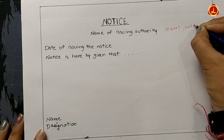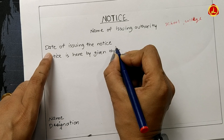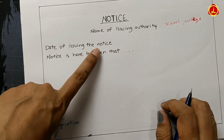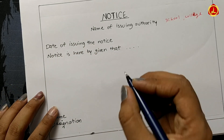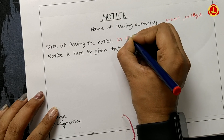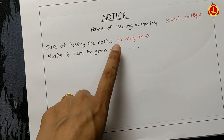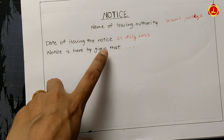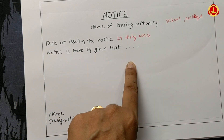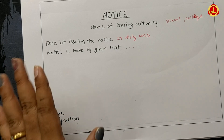Then comes the location, followed by the date of issuing the notice. Remember, the date written is the current date — the date on which the notice is being written. The date must be written in the correct format, otherwise you will not get marks. After that, you start the body with the common opening line: 'Notice is hereby given that.' You should remember this line.